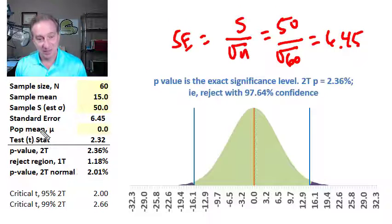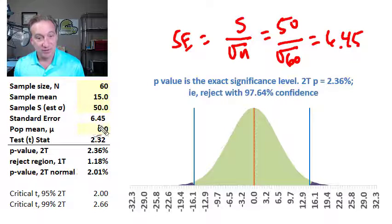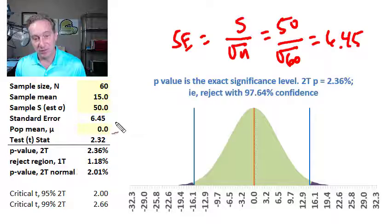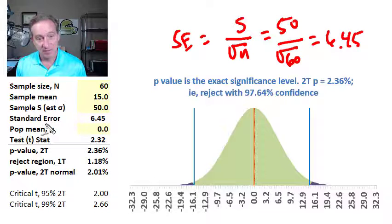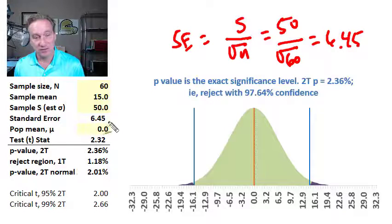So the standard error is a standard deviation. It's just a particular type of standard deviation. It's the standard deviation of the sampling distribution, and it's going to change with each sample that we take, but never forget that it is itself a standard deviation.